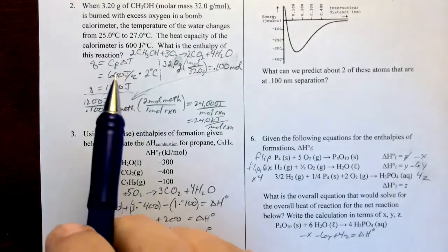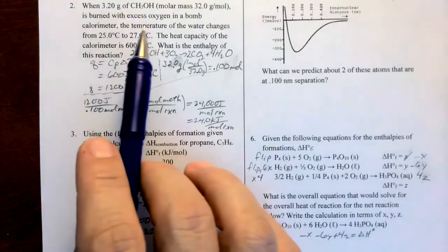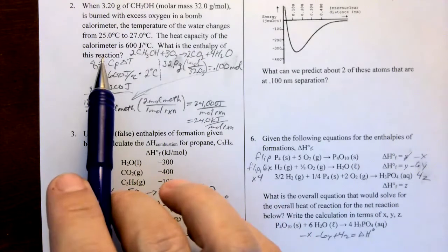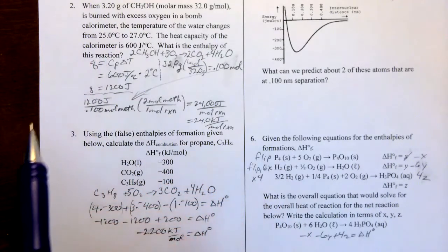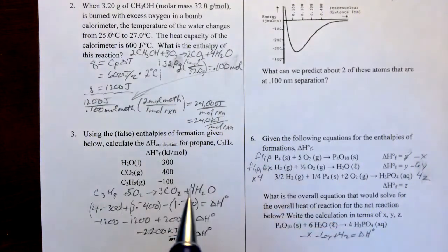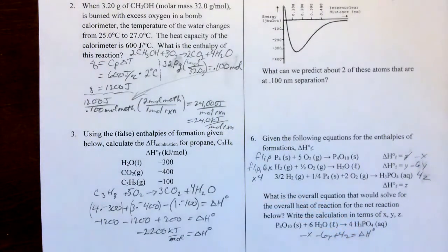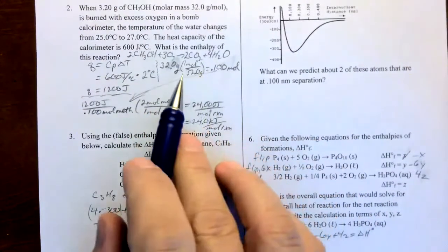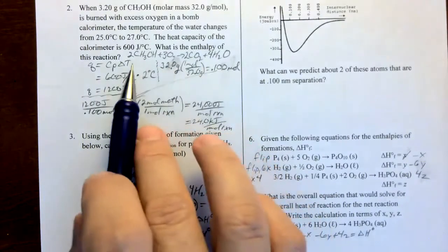Here we have a certain amount being burned, and we want the enthalpy of reactions — basically we want the standard delta H. That's measured in kilojoules per moles of reaction, and that's very key. We need kilojoules, and then we need moles of reaction. The thing is, we don't know moles of reaction. What we can figure out from this is moles of chemical. Also, you're going to need the balanced reaction.